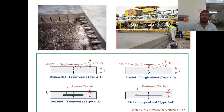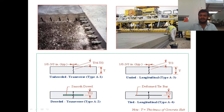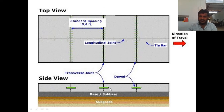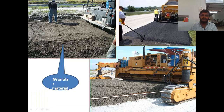Here you can see dowel bars in a slab structure. One panel connects to the next via a longitudinal joint, with contraction or expansion joints as well. Dowel bars help keep both slabs together and load transfer between slabs takes place through them. By providing reinforcement you can increase the spacing of joints. The cross-section shows dowel bars, longitudinal joints, transverse joints, and granular material (GSB) below.